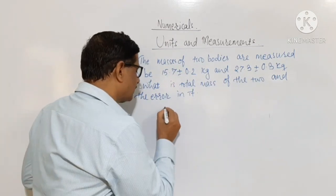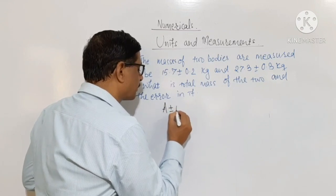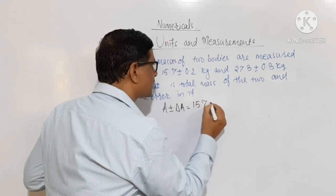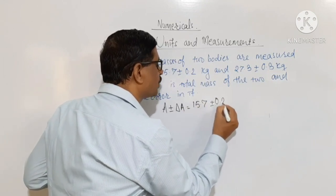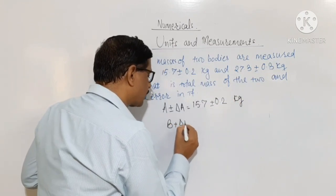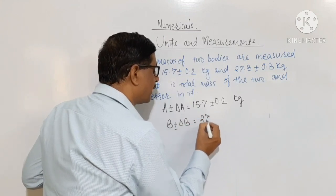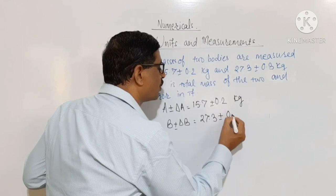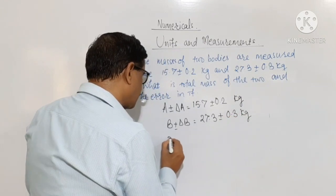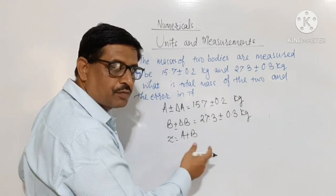What we know is that here A plus or minus delta A is equal to 15.7 plus or minus 0.2 kilogram, and B plus or minus delta B is equal to 27.3 plus or minus 0.3 kilogram. Then Z is equal to A plus B, that is the sum of the two.